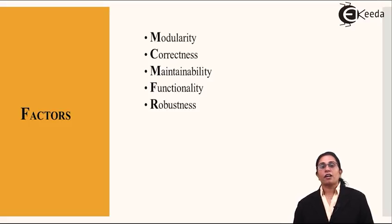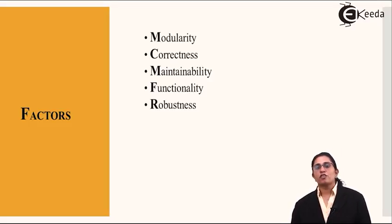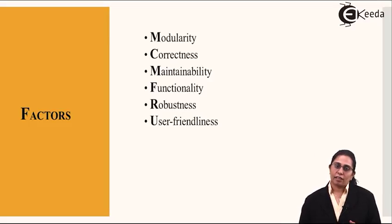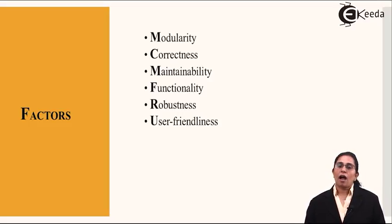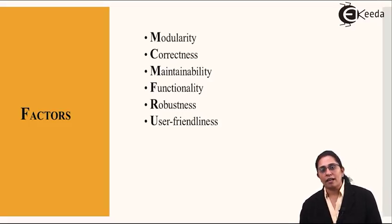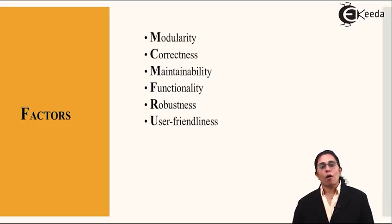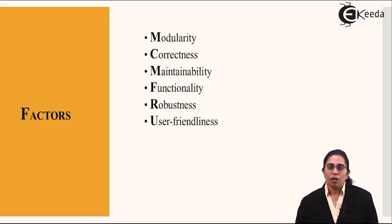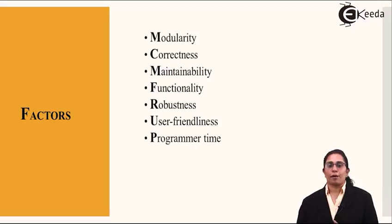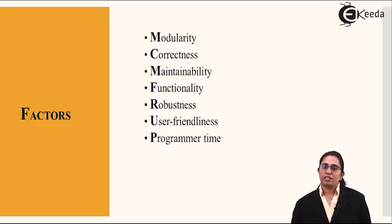Another important factor is the robustness of the algorithm — how clearly and how friendly it can define my problem. Robustness also gives the complete functioning criteria of the algorithm. User-friendliness is also important: if I have designed an algorithm and it is given to a programmer to code, it must be user-friendly so I can explain clearly how it has to be coded. Programmer time matters too — the algorithm should not take a lot of the programmer's time.